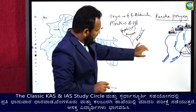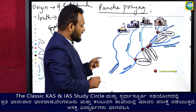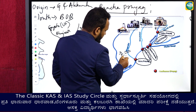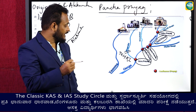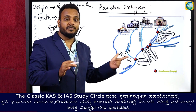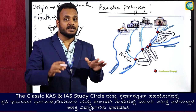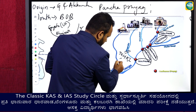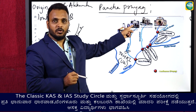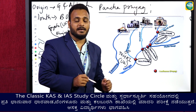On the Bhagirathi river, we have constructed an important dam called Tehri Dam. This particular Tehri Dam is certainly in Uttarakhand. Gangotri and Alaknanda are confluencing at Devaprayaga, which is in Uttarakhand, and from there it is called Ganga.